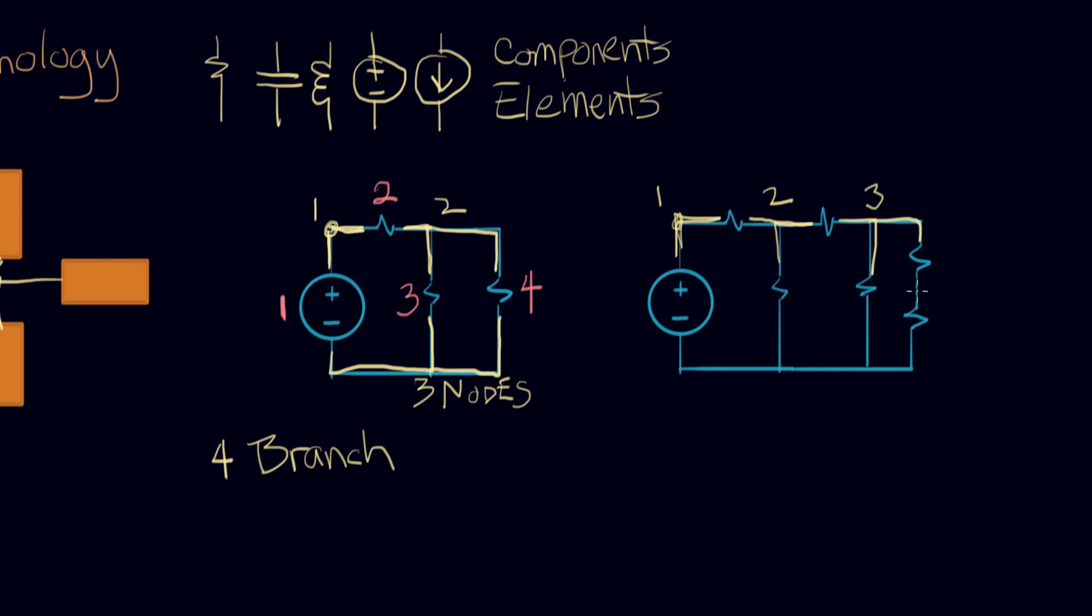Down here we have, there's a junction between two resistors, so that's our fourth node. And finally we have this node here connecting these four elements with one node. This is sometimes called a distributed node, when it's all spread out on the page like that, but it's still just one node. So this circuit has five nodes.